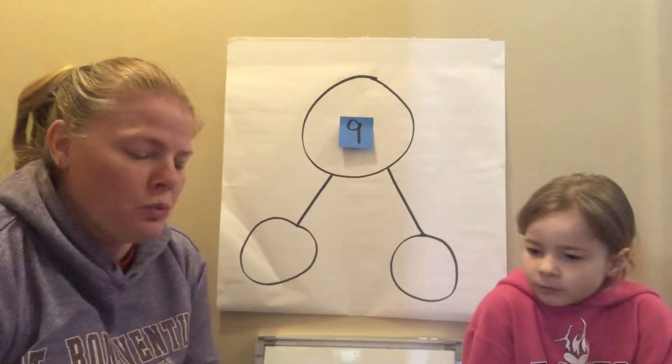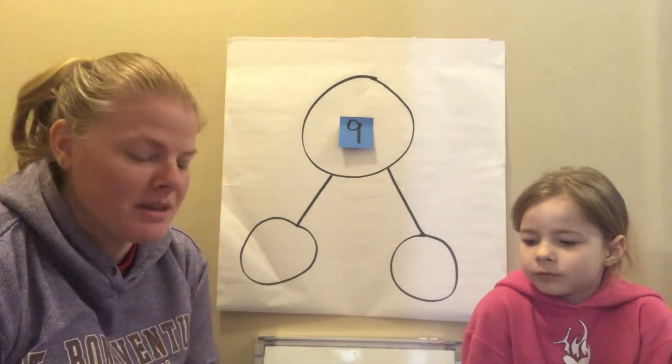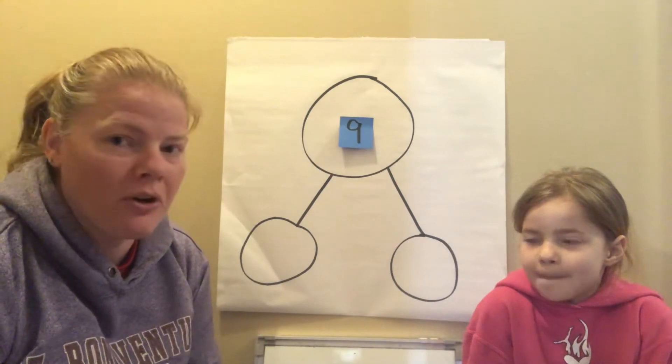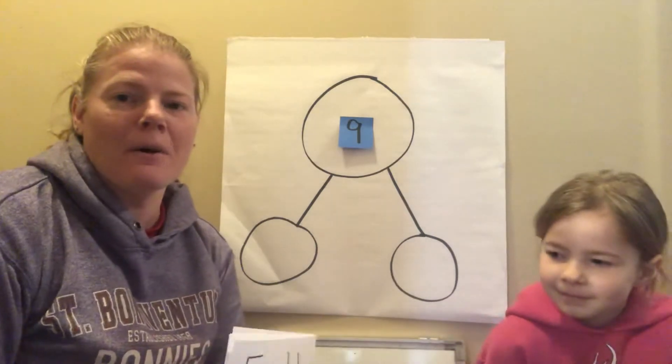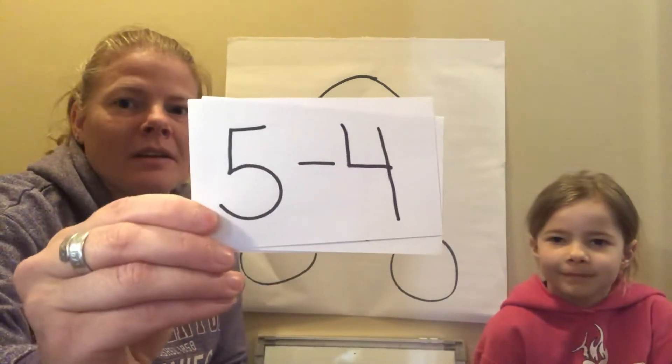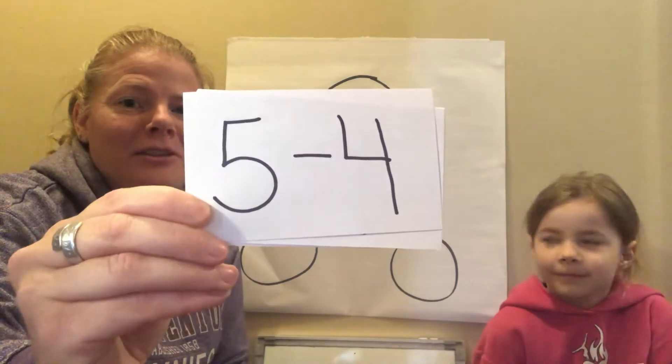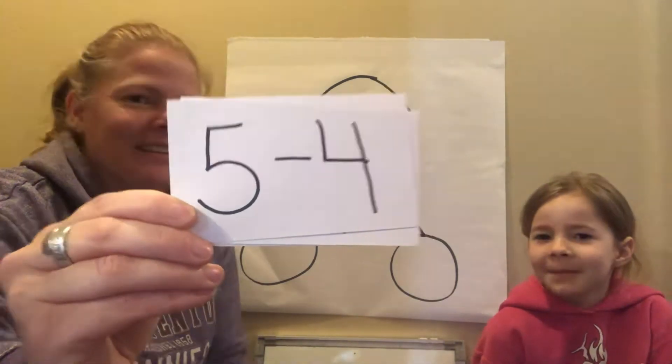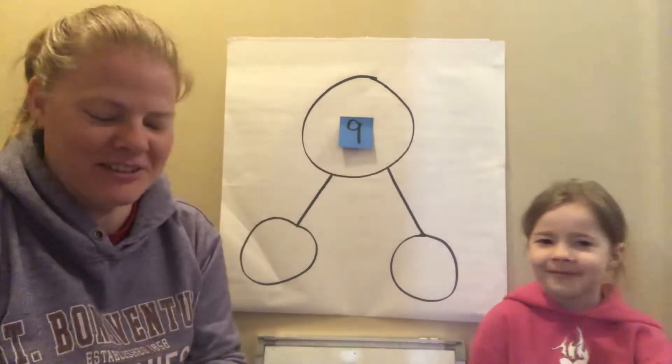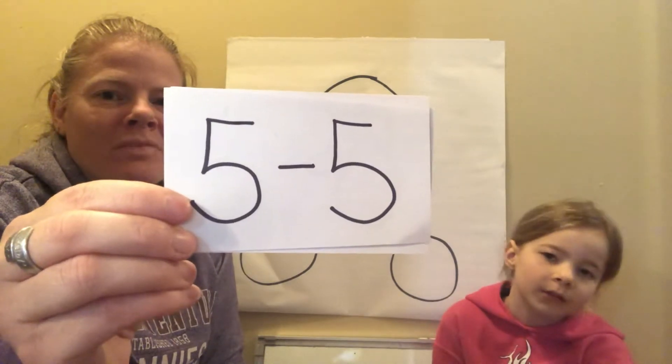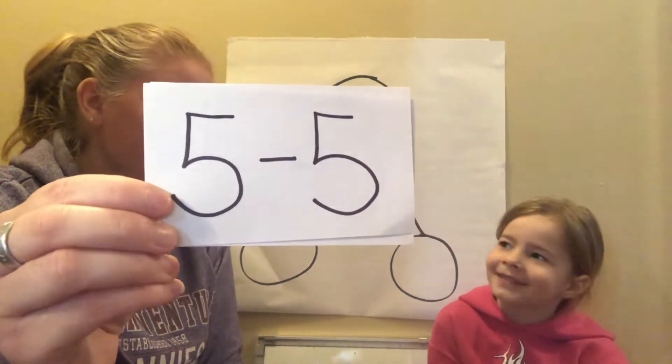We're gonna see if you can tell me the answers before I let Shelby answer. All right, ready, here we go. Five minus four is? One. Good. Here comes the next one. Five minus one is? Four. Good. Five minus five is? Zero. So far so good.